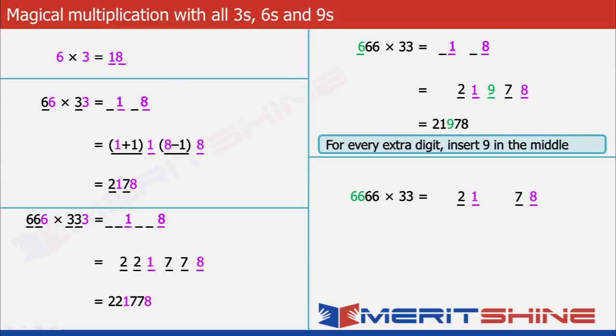Now we have 2 extra 6s to take care of. For that, we will insert two 9s in the middle, thereby giving us 219978 as our final answer.